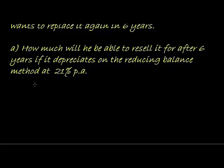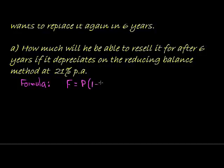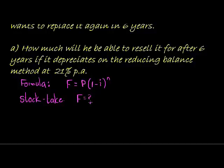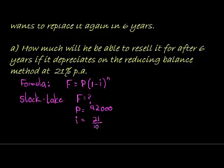We need to identify the correct formula. For depreciation on the reducing balance method, the future value equals the present value times (1 minus i) to the power of n. Stock-take: the future value is what we want to calculate; the present value is R92,000; i is 21% so it's 21 over 100; and n is 6 years, since it depreciates at 21% per annum for six years.